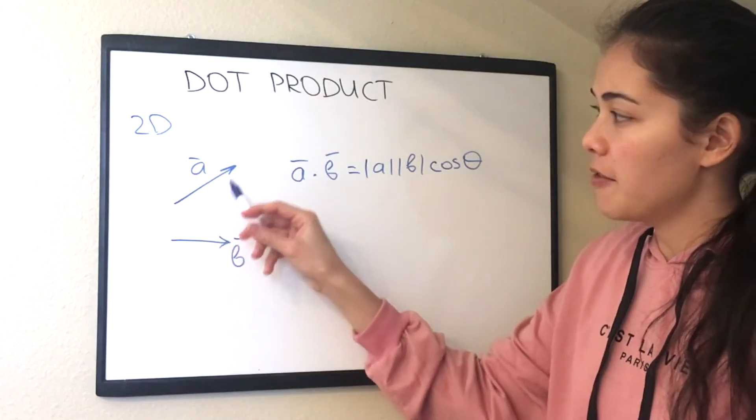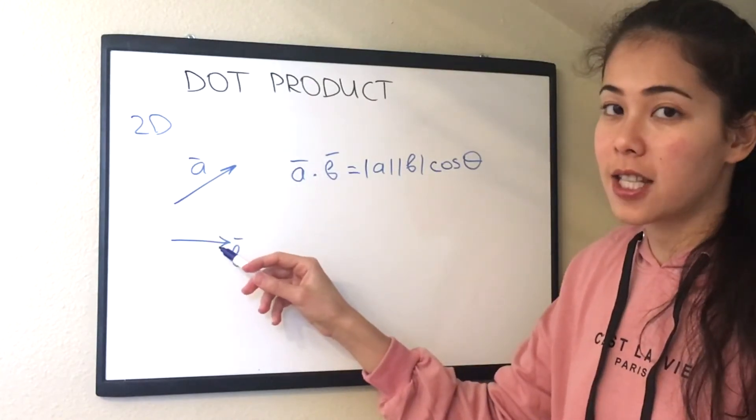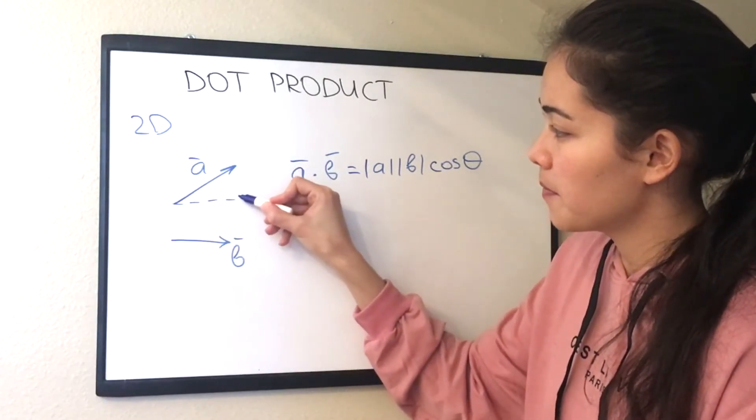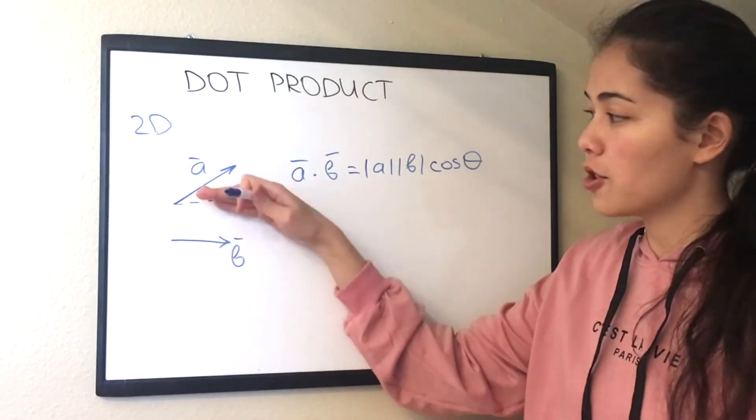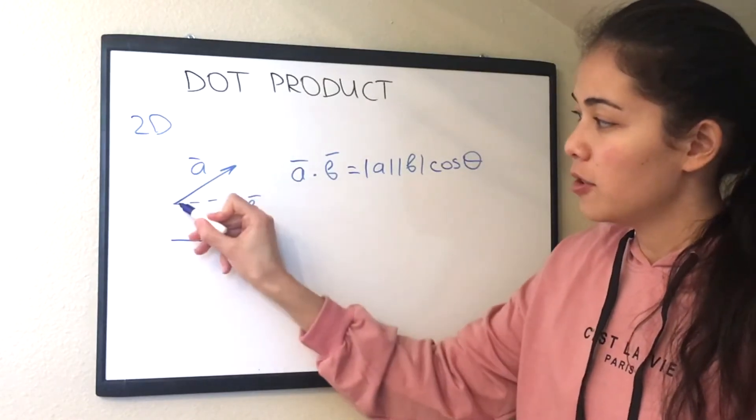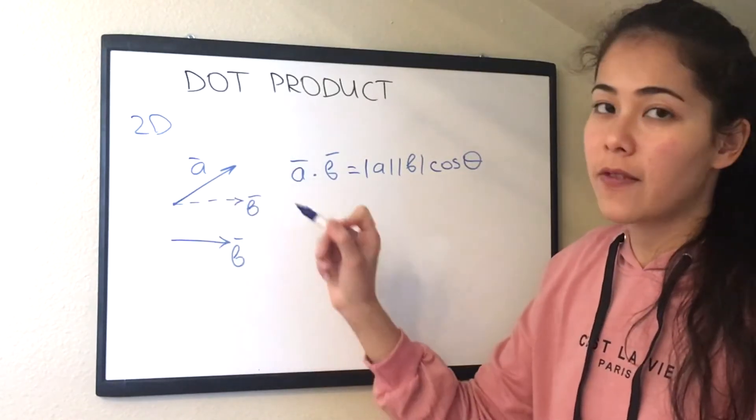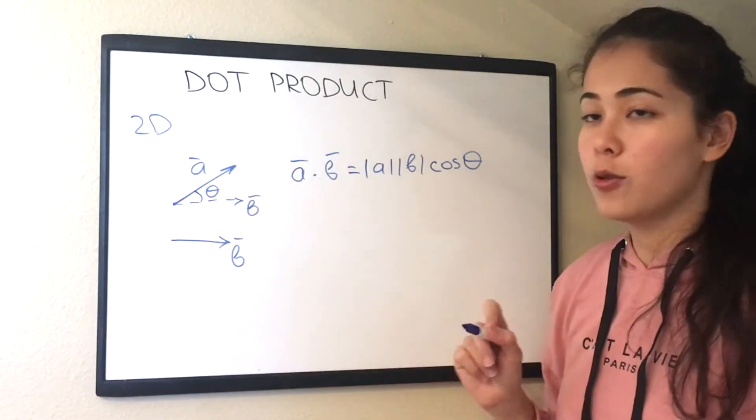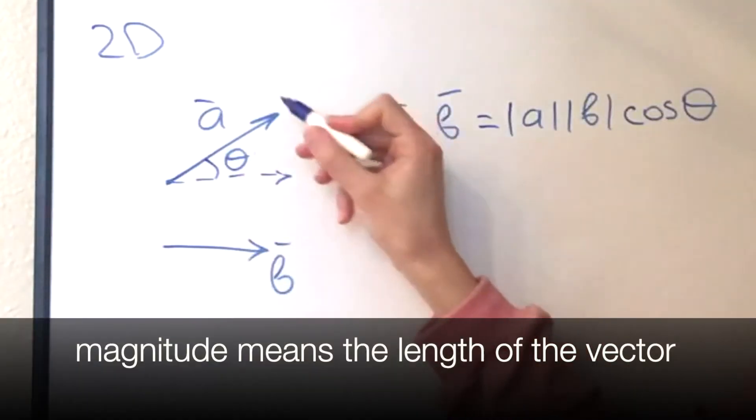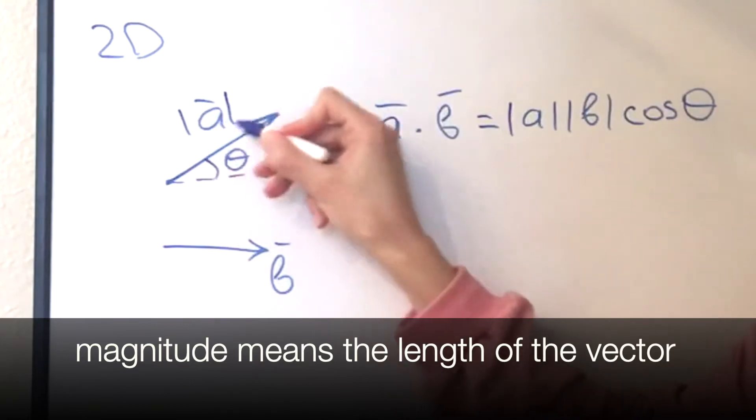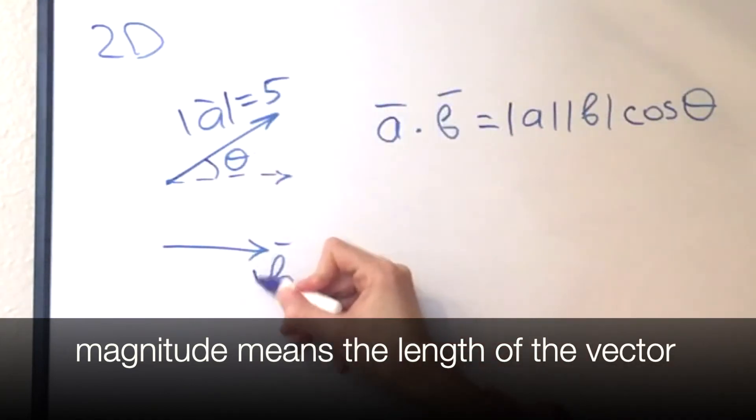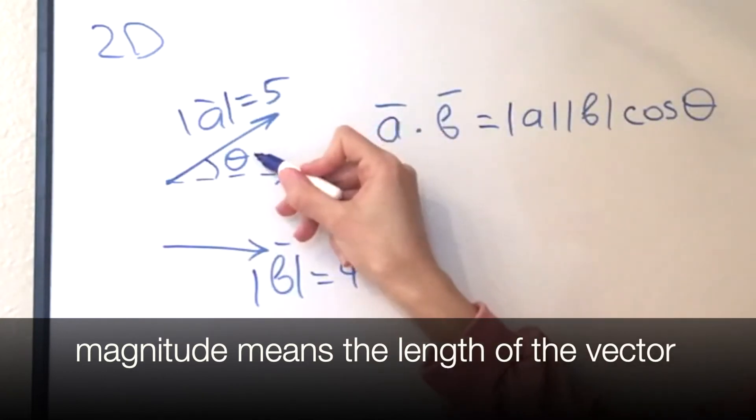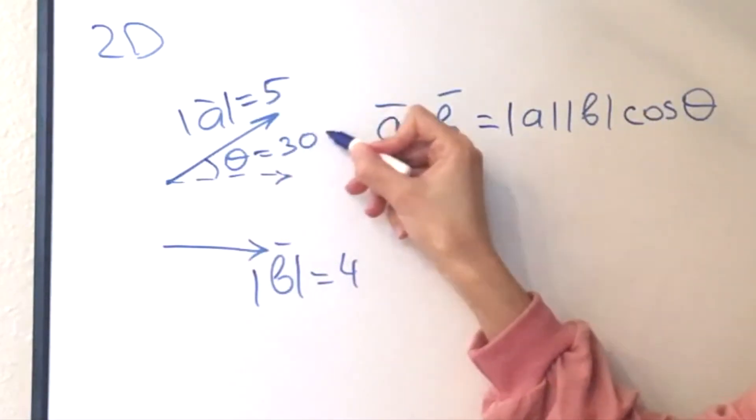So if we have these two vectors in some space we need to find an angle between them, and in order to do that we just move vector b to start at the same point as vector a and define the angle between these two vectors. So let's say the magnitude of vector a is equal to 5, the magnitude of vector b is equal to 4, and the angle between them is 30 degrees.